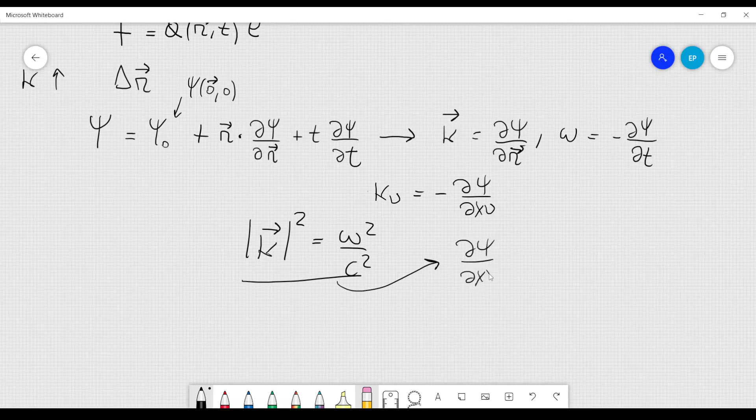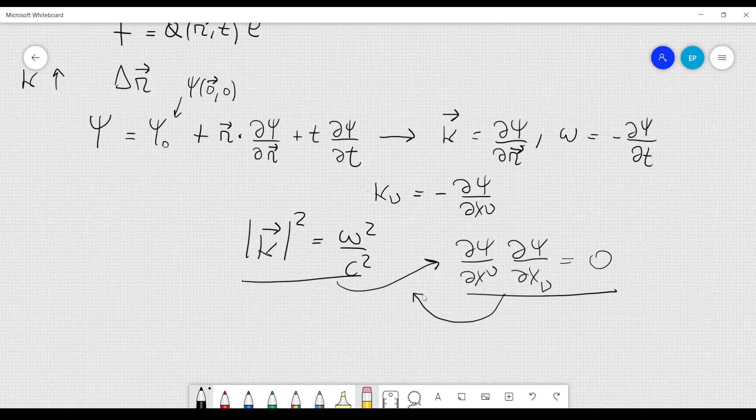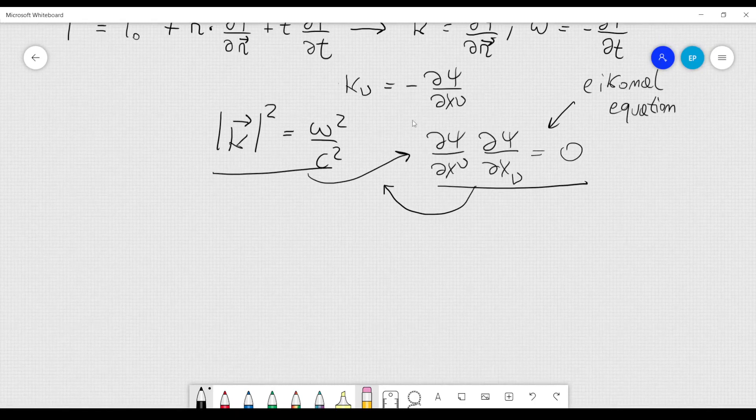d psi over dx nu, d psi over dx nu, with a lower index here, to denote that we have to sum over nu, and this is equal to 0. You can check that this equation here is exactly coincident with that equation, and this is called the Iconal equation, how can we check that this equation here leads to that?